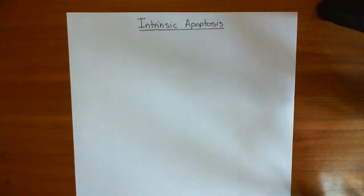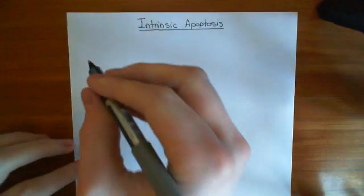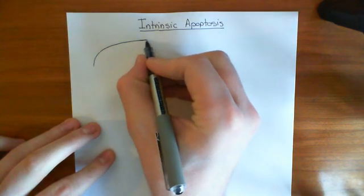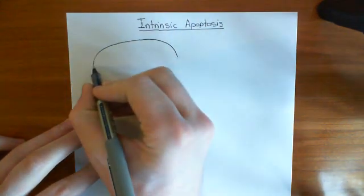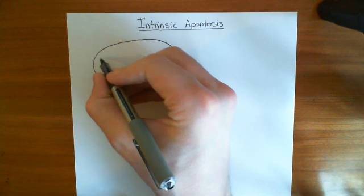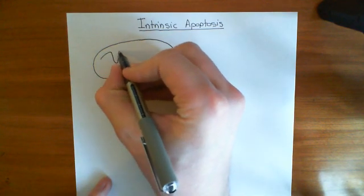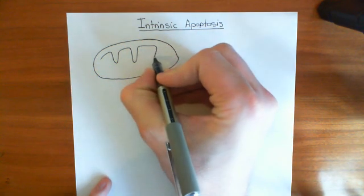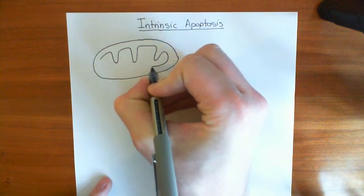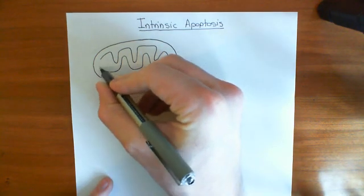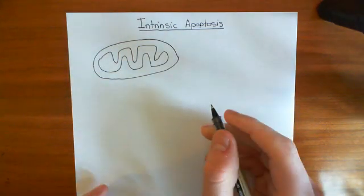The key concept that intrinsic apoptosis completely and utterly relies on is the release of cytochrome C from the intermembrane space of the mitochondria. The mitochondria are the stars of the intrinsic apoptosis pathway. We'll have a reminder of the structure of the mitochondria and discuss cytochrome C — not its involvement in the electron transport chain, just its location in the mitochondria — and then we'll discuss the BCL2 proteins.